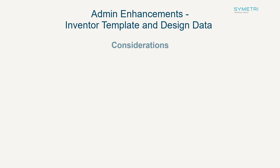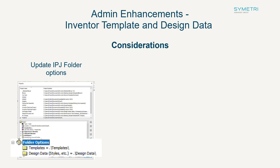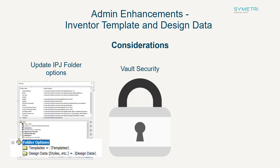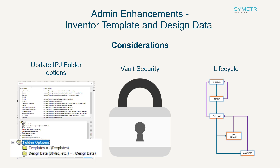There are also a few considerations when making this change. You may need to change the templates and design data local location from the vault IPJ file. You may also want to consider the security on the template files — who is able to make changes to them. You could also consider the lifecycle state on the files, as now that you are storing the data in vault you can put some document control in place and keep a full history of the data. This is a useful change that will add a lot of benefit to standardisation.